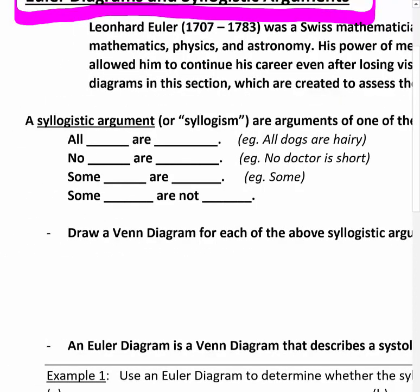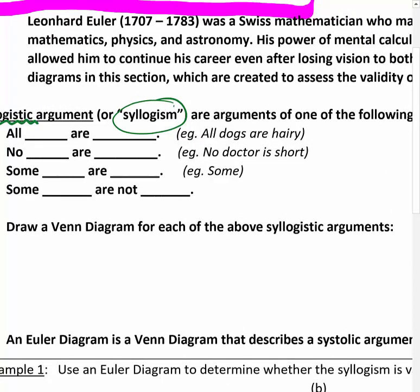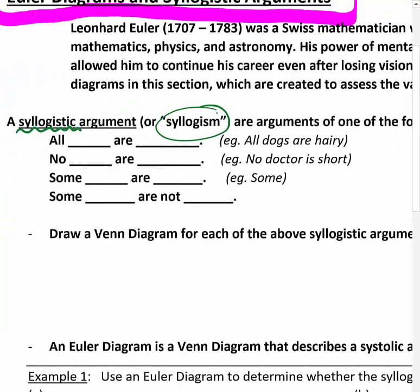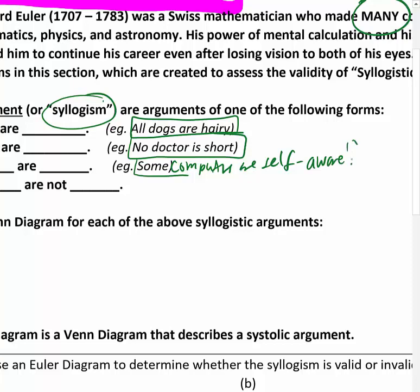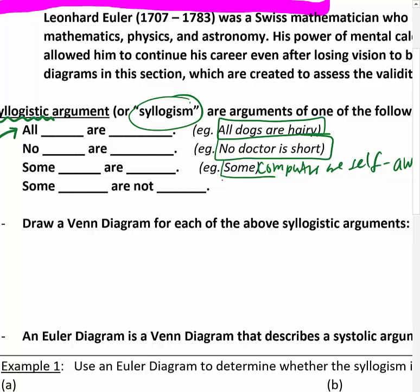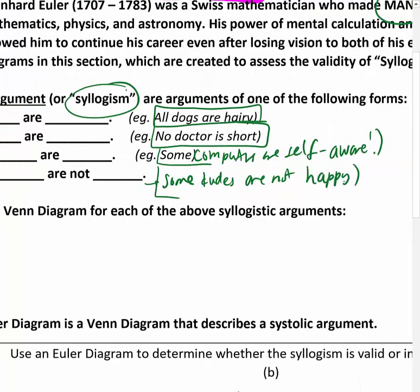So okay, if you're saying what the hell, I never heard that word in my life, don't worry, we're about to explain what the heck a syllogistic argument is. Or syllogism. They're arguments of one of the following forms. So we actually kind of saw one of these as an example in the very beginning of the previous section. All blanks are blanks, like all dogs are hairy. No blanks are blanks, no doctor is short, or no doctors are short. Some blanks are blanks. Some computers are self-aware. Ooh, don't be scared. That's creepy. Some blanks are not blanks. Some dudes are not happy. I don't know. You can get weird with it if you want.